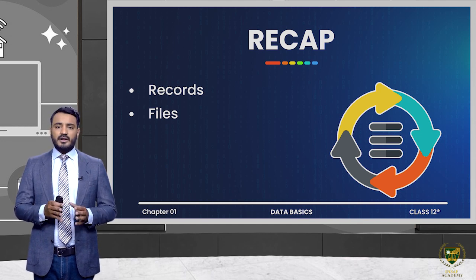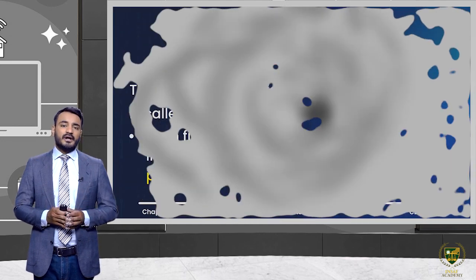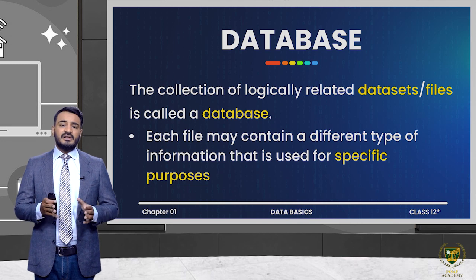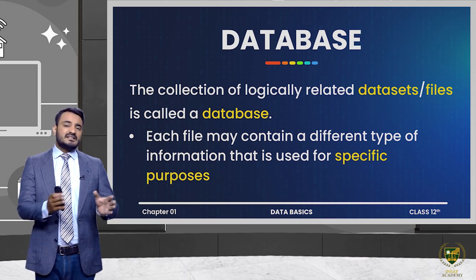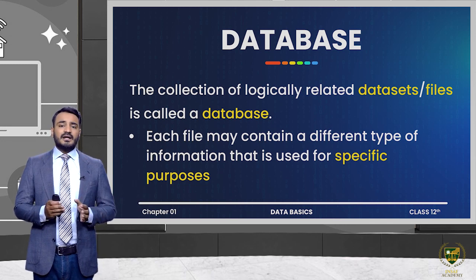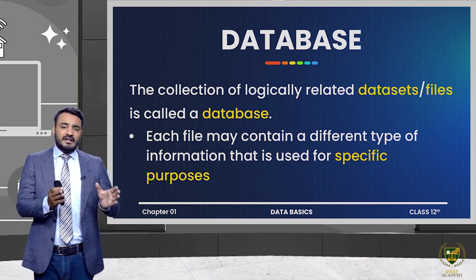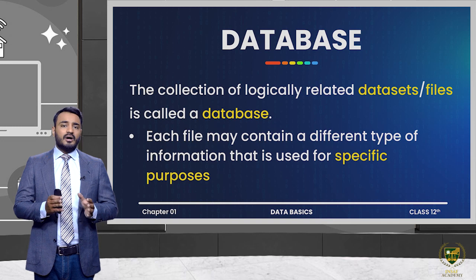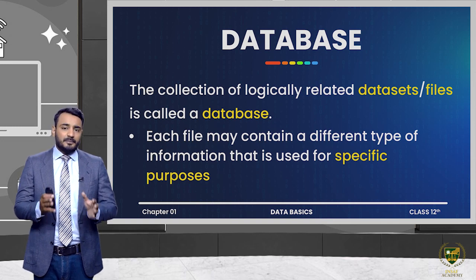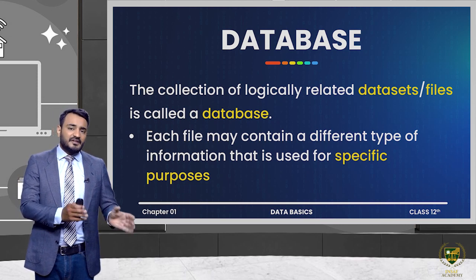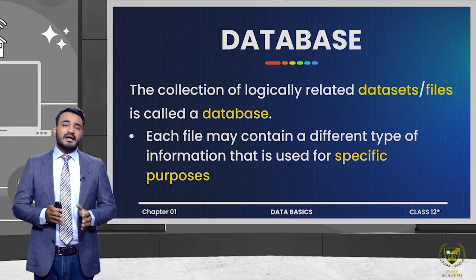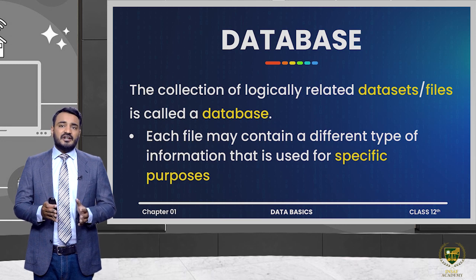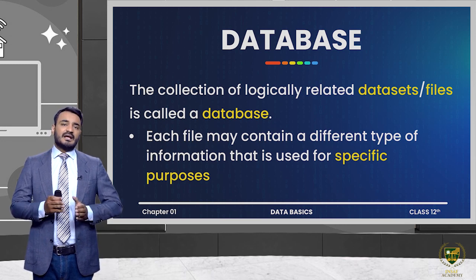In the last lecture we discussed records and files. Fields are collected into records, records are collected into files, and files are called data sets. If we collect these data sets and files together, we get a database. So the definition of database is: a collection of logically related data sets and files.